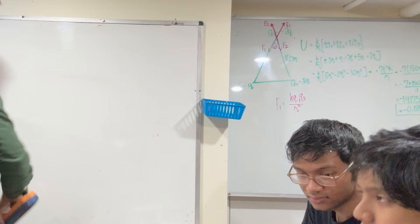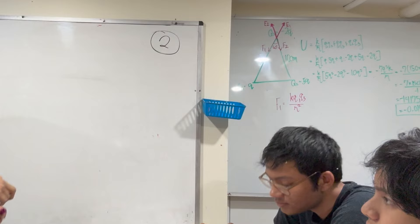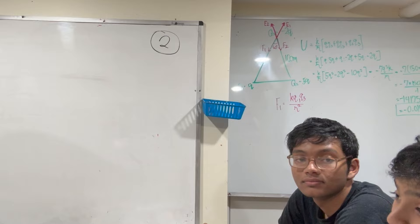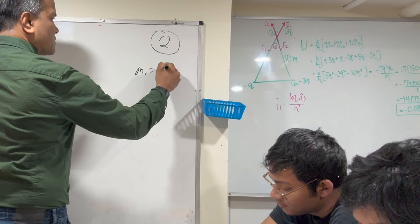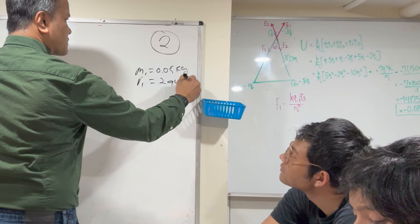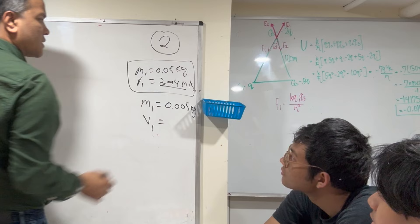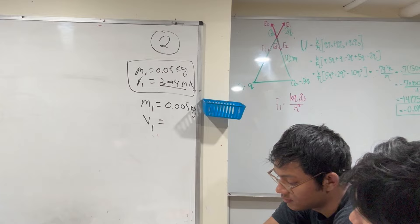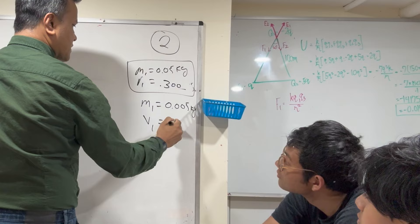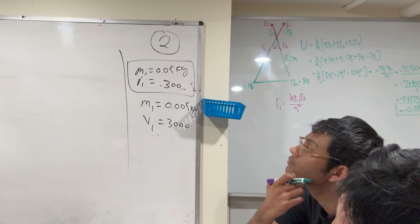This is pretty much the exact same problem as last time, but the bullet's mass has changed. So what did you discover yesterday? If mass goes down, velocity goes up. Yesterday the velocity with mass one at 0.05 kilograms was 294 meters per second. Today mass one is 0.005 kilograms, so velocity would be much higher — probably ten times as big. So if this was 300, this should be 3000.